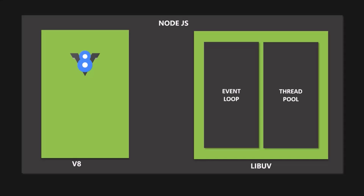One important thing to note is that LibUV is completely written in C++ and not in JavaScript. V8 engine is also written in C++ along with JavaScript. So it is not wrong to say that Node.js is a program written in C++ and JavaScript and not just in JavaScript. But the important point is that Node.js ties all these libraries together and gives us developers access to their functions in pure JavaScript. This architecture allows us to write 100% pure JavaScript code running in Node.js and still access functions like file reading, which is actually written in C++ behind the scenes.